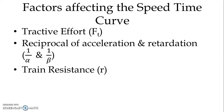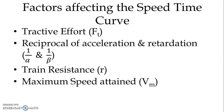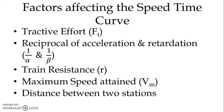Train resistance depends on the type of track — whether it is an up gradient, down gradient, or level track. Maximum speed attained is V_max. Distance between two stations determines the type of service, whether it is mainline service, suburban service, or urban service. These are the factors which affect the shape of the speed-time curve.